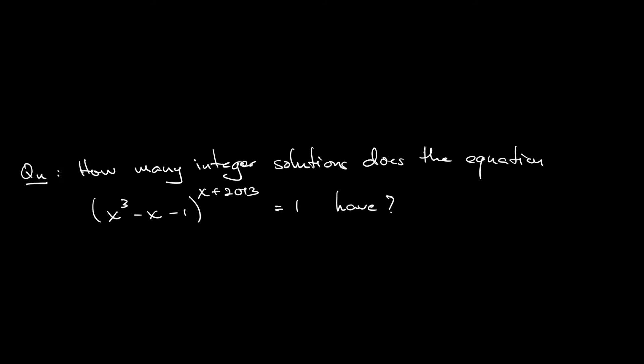The question asks how many integer solutions does this equation have? The equation is x cubed minus x minus 1, the whole bracket, to the power of x plus 2013 equals 1. So how many integer solutions does it have?